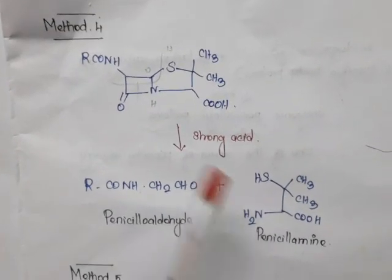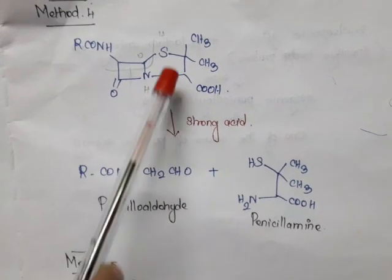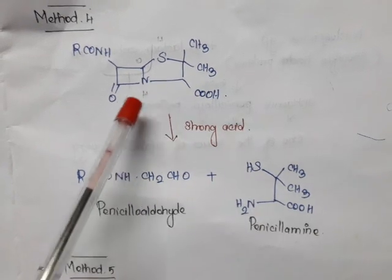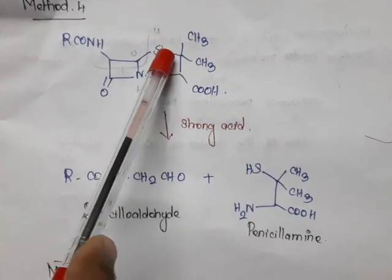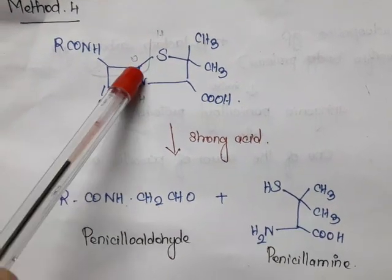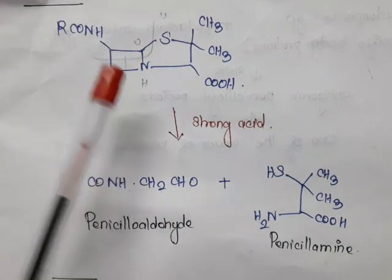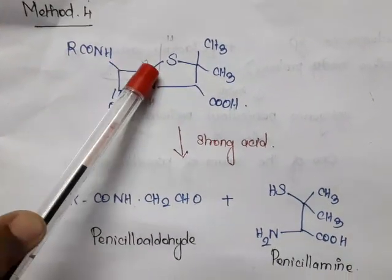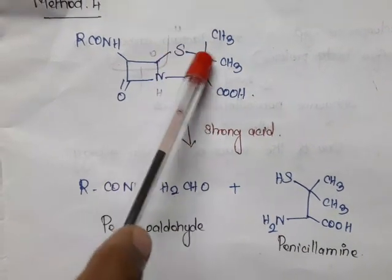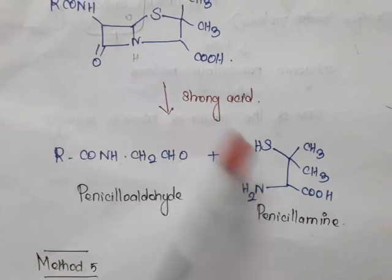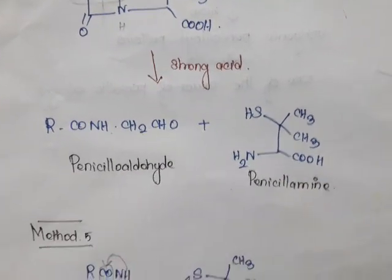Now we will see method 4. Here by means of strong acid, water is added. On hydrolysis, H is added with the sulfur, one more H is added with nitrogen, and oxygen is added with the carbon — there is cleavage. So we get R-CO-NH-CH2-CHO as one compound (penicilloaldehyde), and SH-CH with C(CH3)2-CHOH-NH2 as another compound (penicillamine). Method 4 also gives penicilloaldehyde and penicillamine.